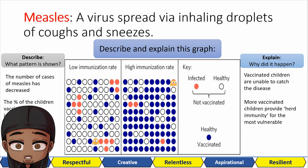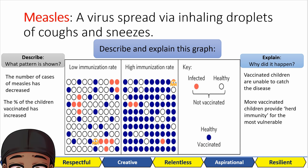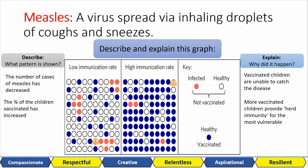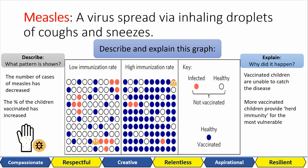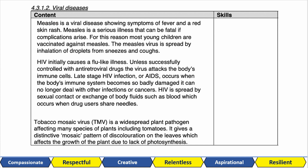Why can't everyone just get vaccinated? We'll look at vaccines in more detail in another lesson, but some individuals have very weak immune systems, making vaccination very high risk for them. Some individuals are also allergic to certain vaccines, though this is very rare in the population. And with that, we've covered the first paragraph.